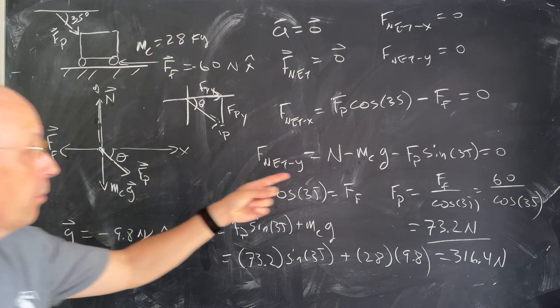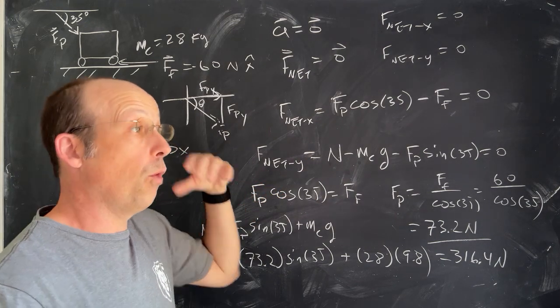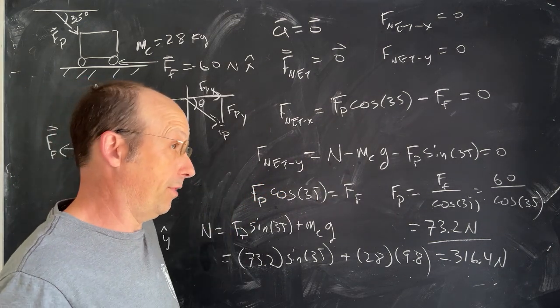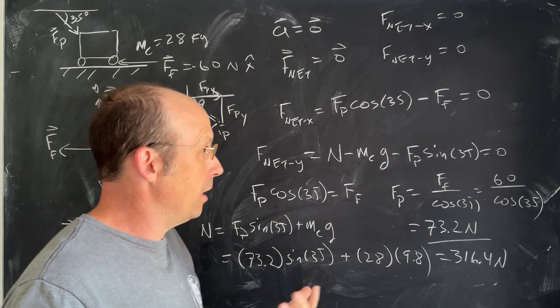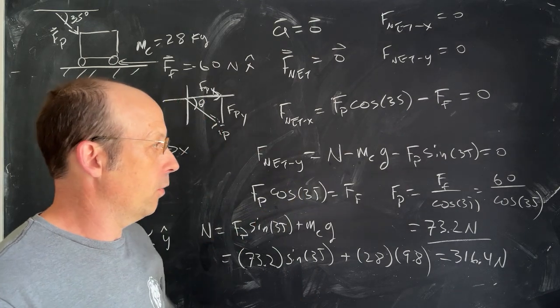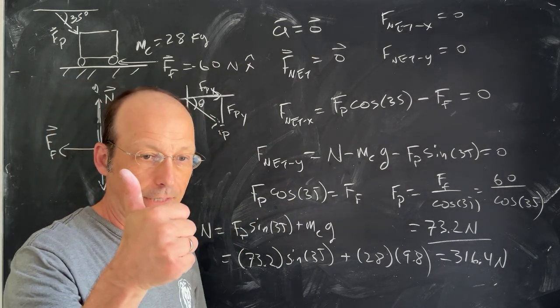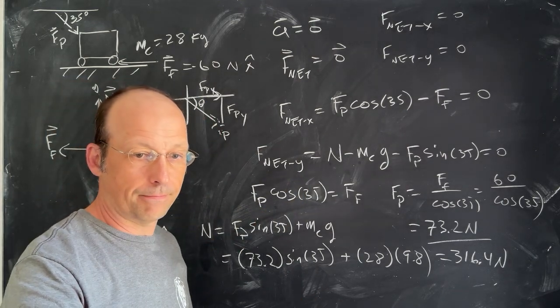Notice that in the original problem the mass didn't actually need to be used for finding Fp — it was given to us but didn't show up in the x equation. That's all.